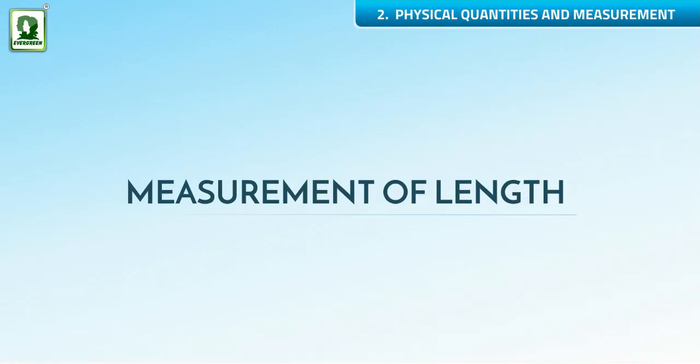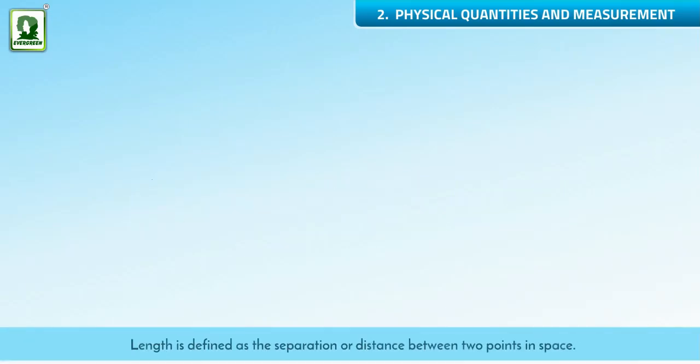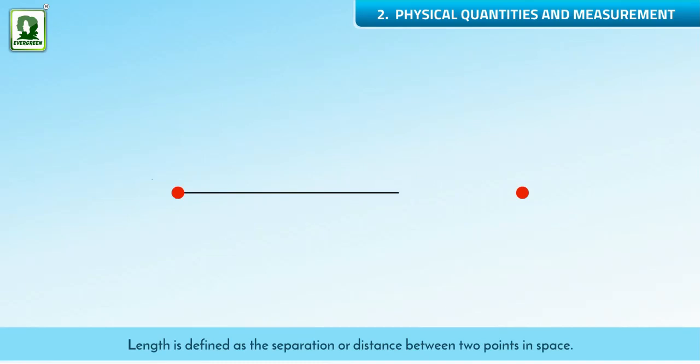Measurement of length. Length is defined as the separation or distance between two points in space.